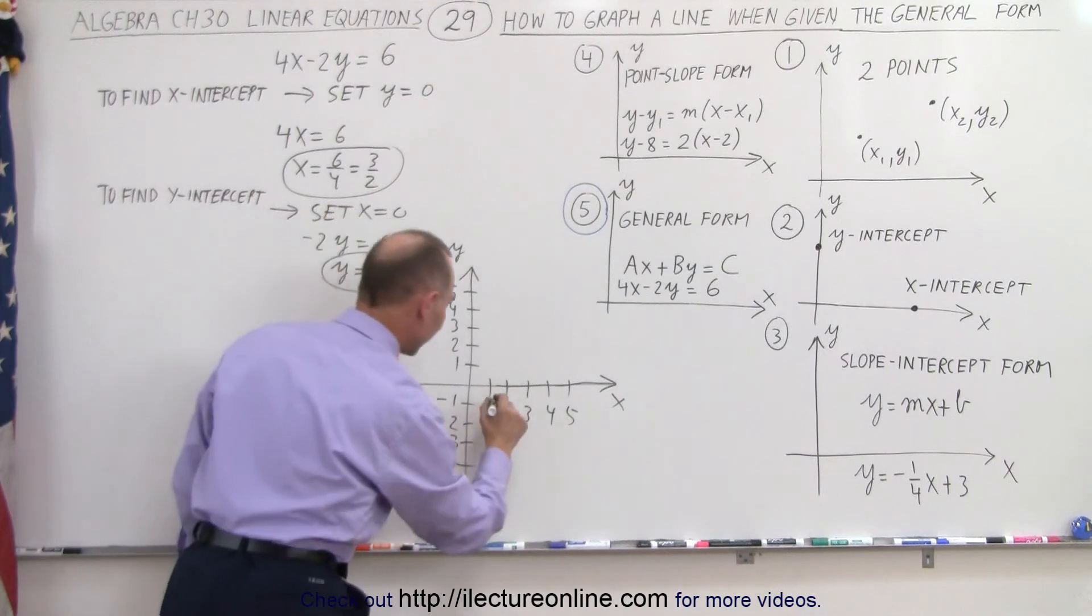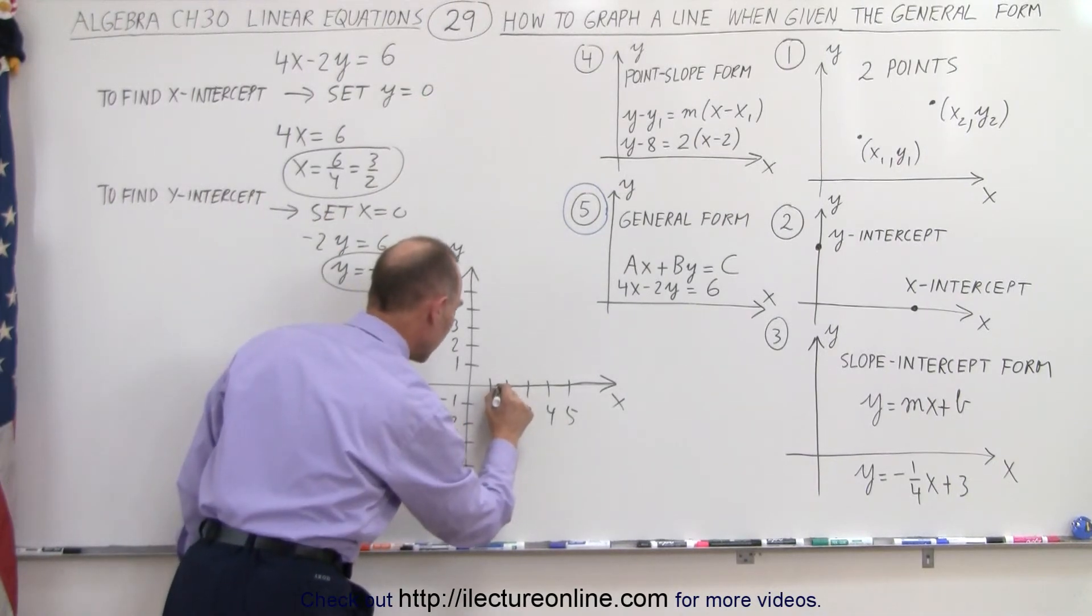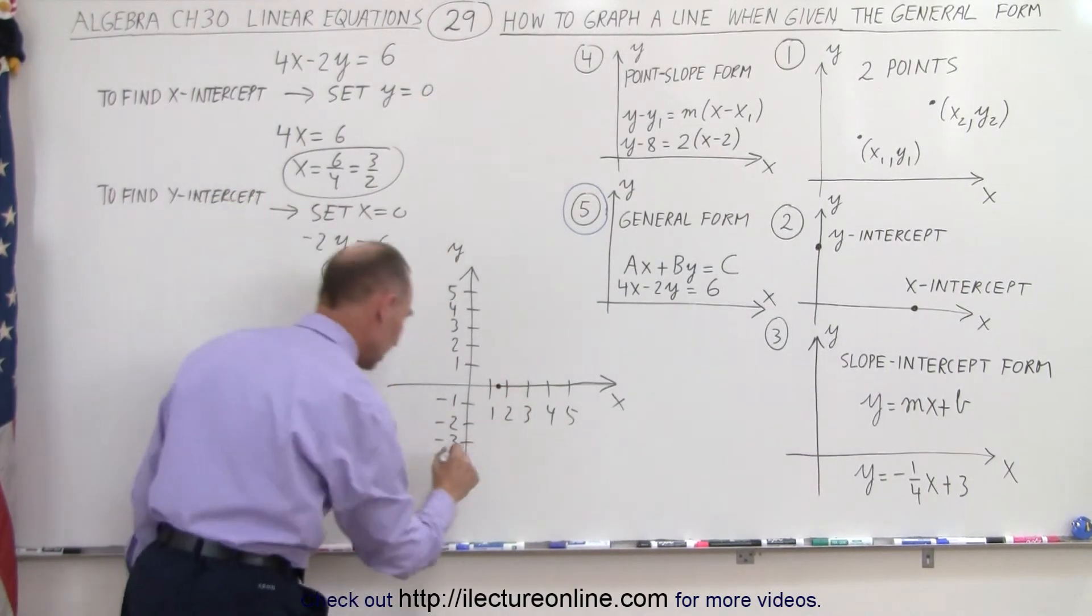The X intercept, X equals 3 halves, that's halfway between 1 and 2. And Y equals negative 3, that's right here.